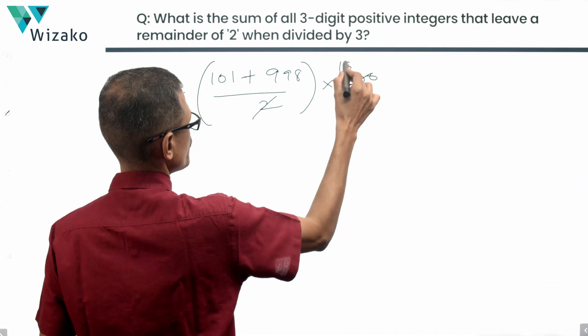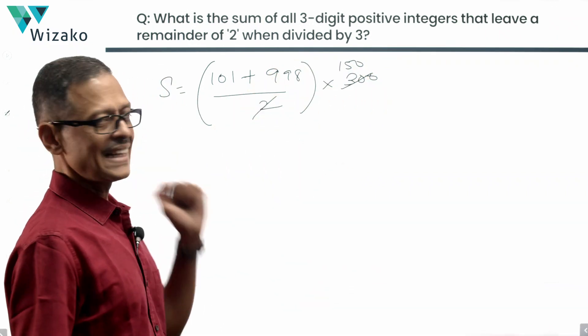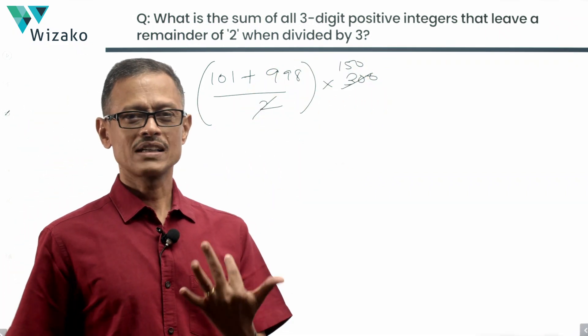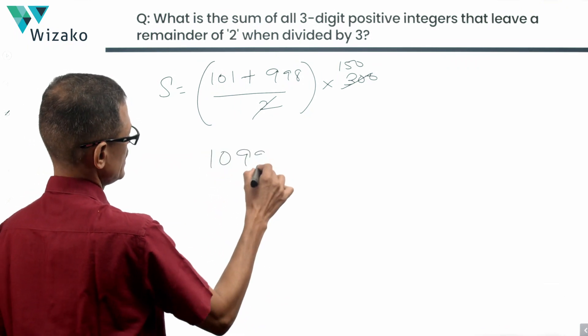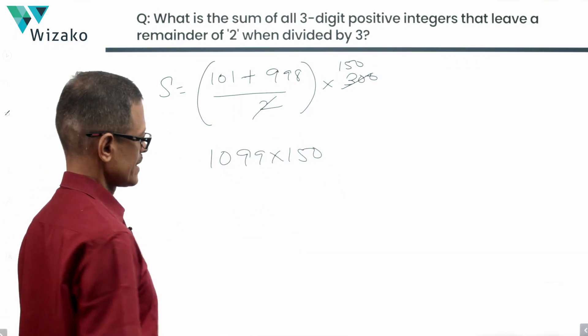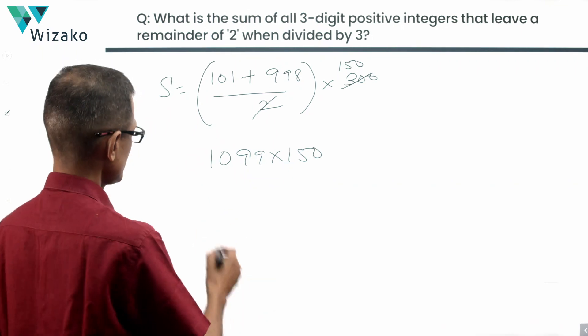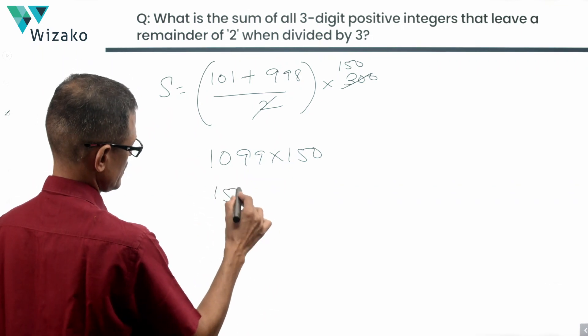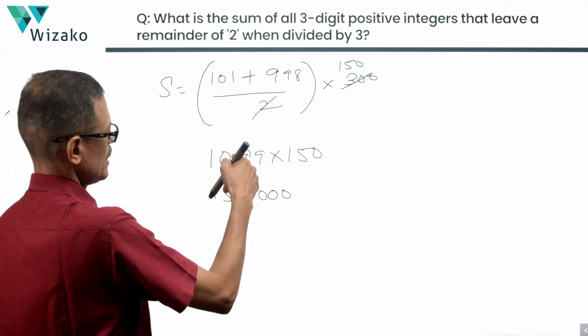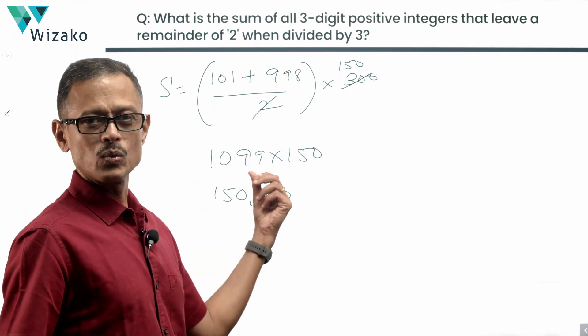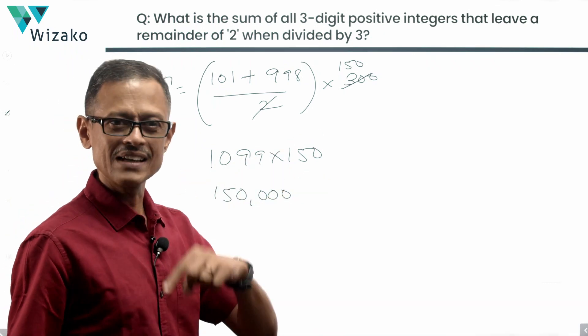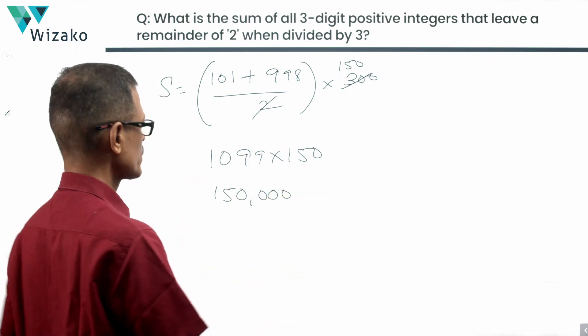This cancels out as 150. 998 plus 100 is 1098. 1099 is what we have into 150 is the answer. 150 into 1000 is 150,000. 150 into 100 would have been 15,000.